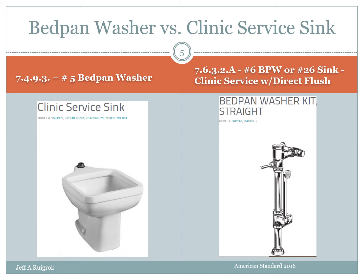Here are some examples of the conflicts or similarities between bedpan washers and clinic service sinks. You can get out your Ontario Building Code and turn to code 7493 and look at item number five. The fixture listed is a bedpan washer — that's a toilet-like fixture, very similar to a commercial toilet except it's square. These edges are usually capped in stainless steel so you can bang out the bedpan and get all the waste into the bowl, and then there'd be a flush valve on top. Unfortunately, manufacturers don't call this a bedpan washer — they call it a clinic service sink. So the manufacturers and the industry at large are at odds with the Ontario Building Code here, but get out your thesaurus and they mean essentially the same thing.